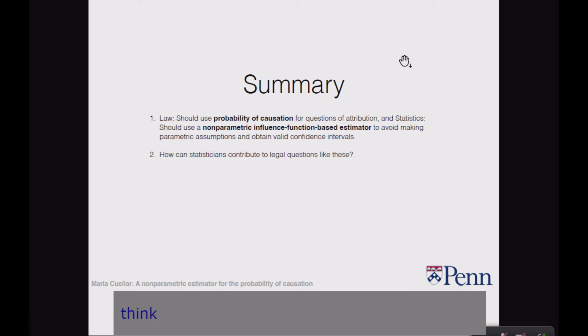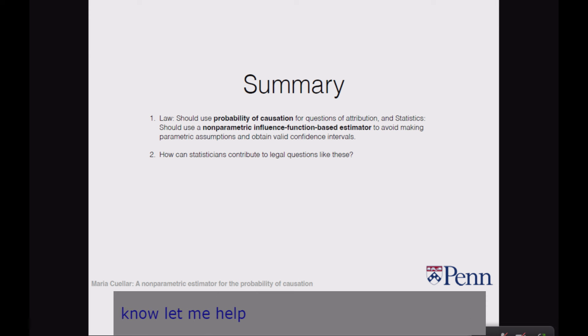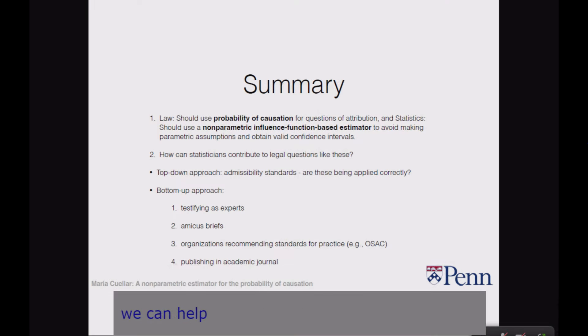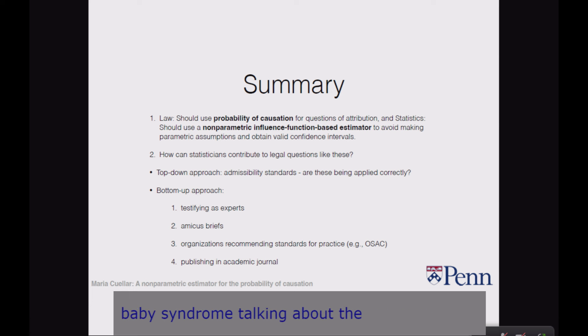I think this is how statisticians can contribute to legal matters — not just coming at the end and helping decide what error rates mean, but thinking from the beginning: what is the thing we should be asking? What is the proper thing to do? Statisticians can testify as experts. I do this regularly with forensic science cases — I am working on one now involving shaken baby syndrome and hair microscopy, talking about the validity and reliability of these methods, to clarify ideas to the judge and jury. We can also write amicus briefs and participate in organizations that recommend standards.